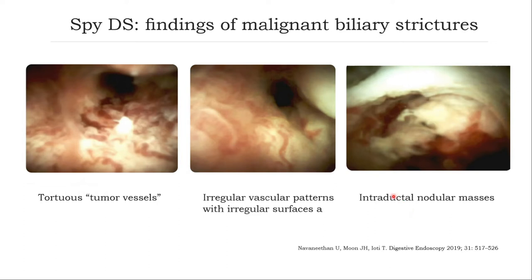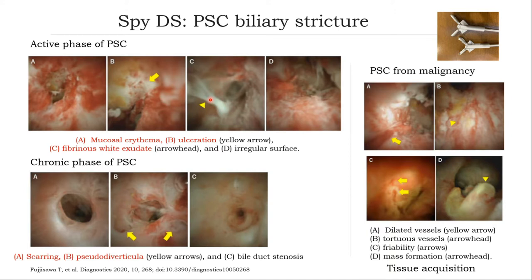This image shows the malignant features of the bile duct under SpyGlass DS. You can see tumor vessels that are dilated, tortuous, and irregular — vascular and corkscrew patterns. Sometimes you can see nodular tumors in the bile duct. PSC is known to mimic cholangioscopy findings and is also a lead factor for cholangiocarcinoma.